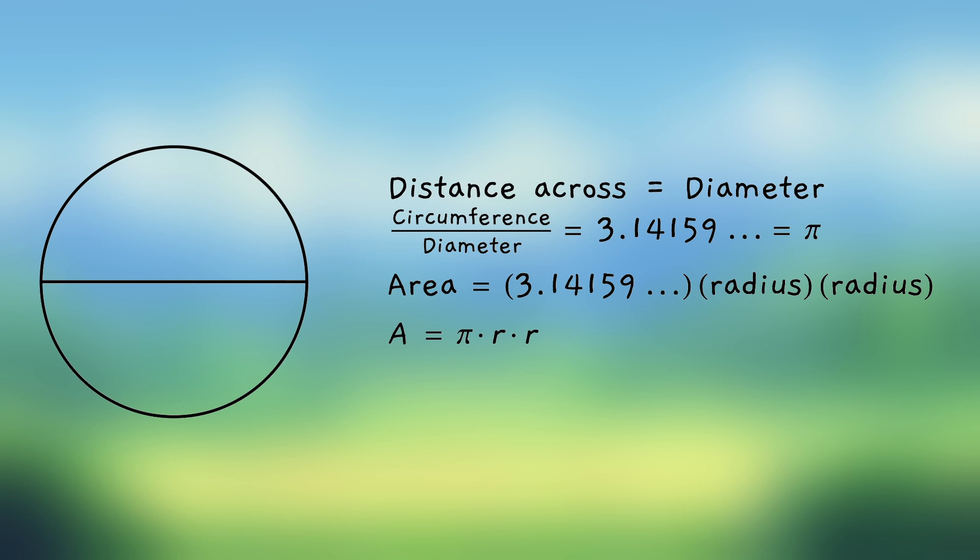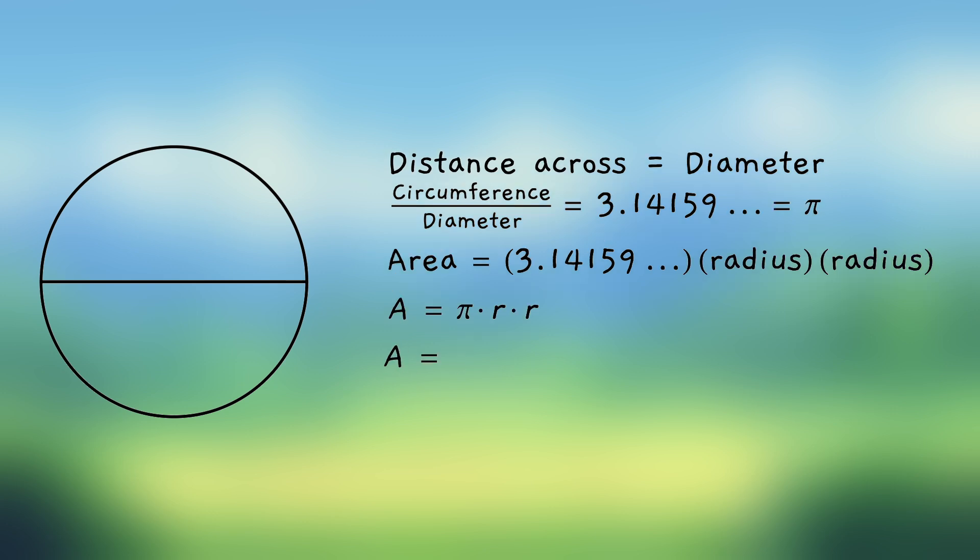So instead of pi times r times r, we can simply write down the area is pi times r squared. And in this formula, the letter r is a variable, the letter a is a variable, and the Greek letter pi is a constant.